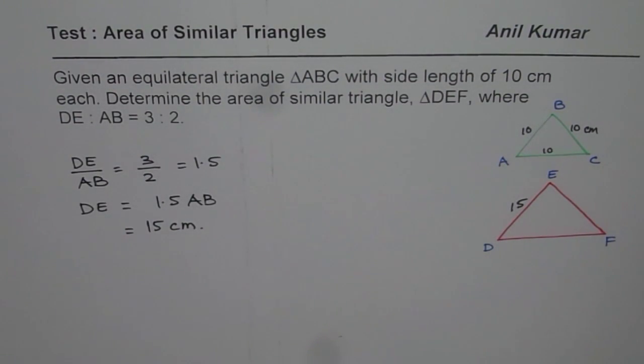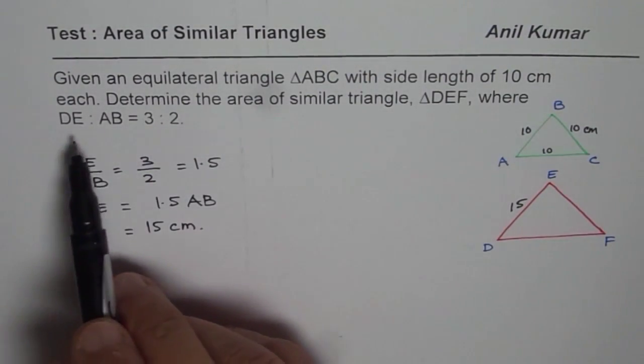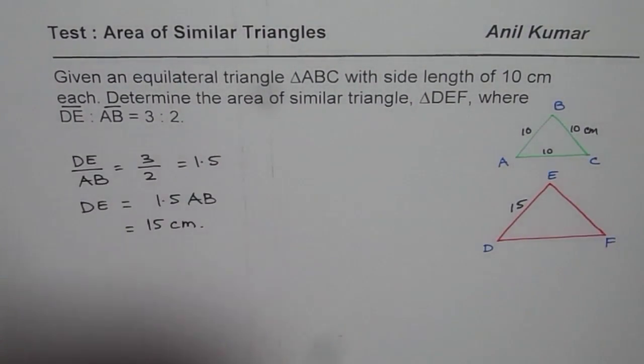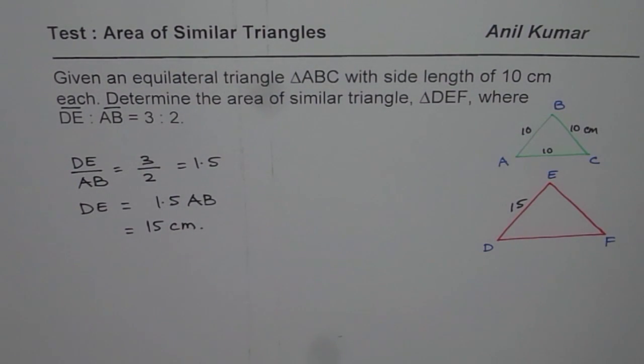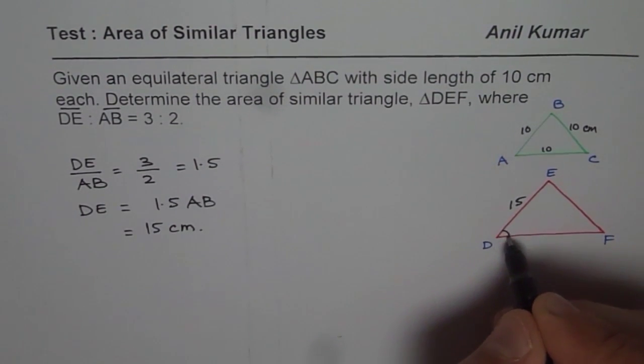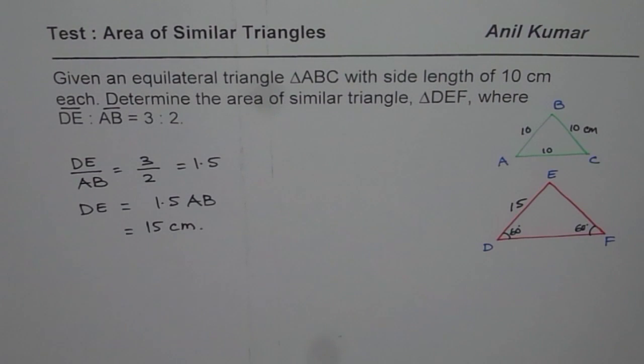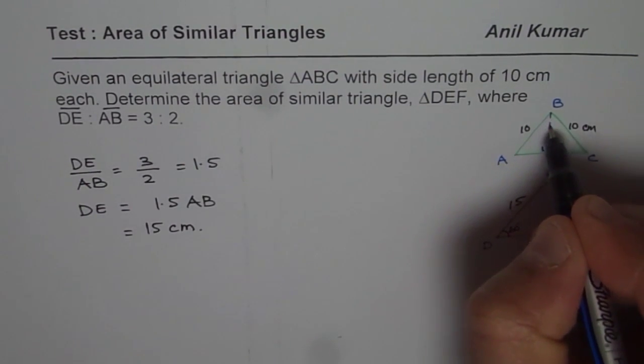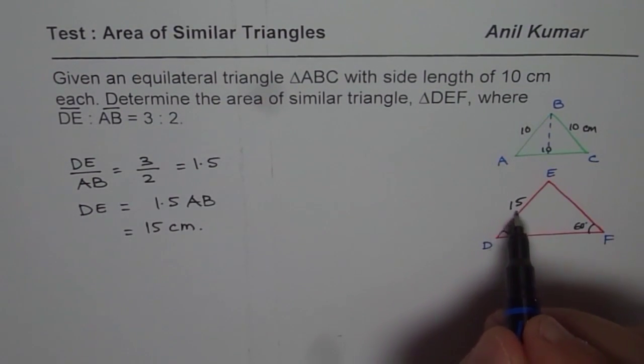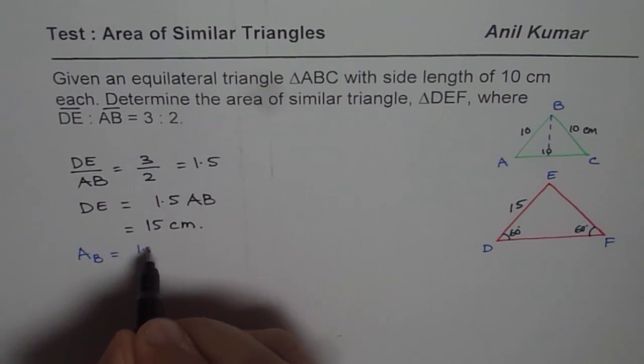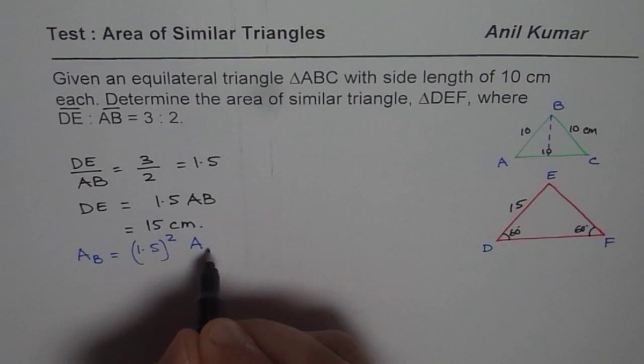Now the question here is, determine area of similar triangle DEF where DE is to AB, the side lengths. So sometimes we may write like this: the length of segment DE to AB is 3 to 2, which means it is 1.5 times longer sides. So obviously this is 60 degrees each since both are equilateral triangles. You need to find the area of bigger triangle. What you could do is find area of smaller triangle, and since the ratio is 1.5 times, area of bigger triangle should equal 1.5 squared times area of smaller triangle.